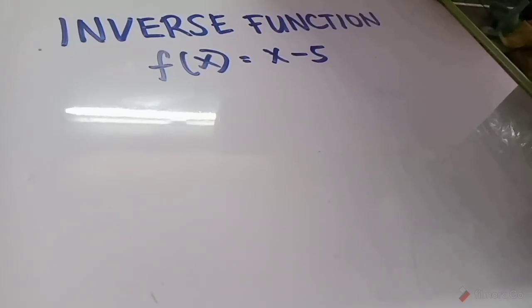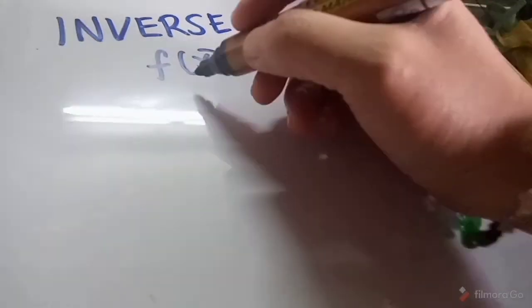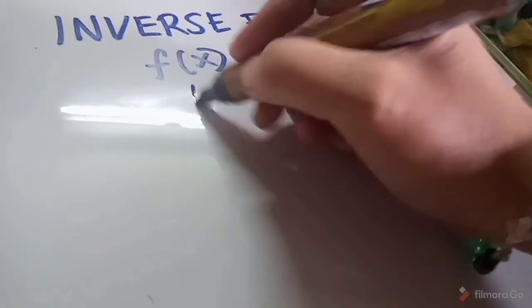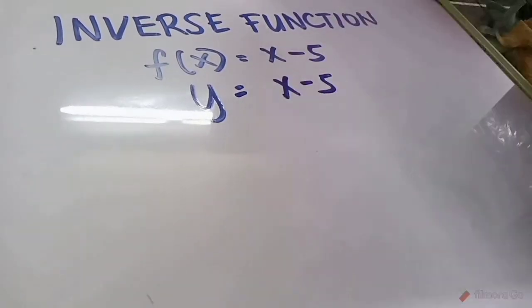Let's solve for the inverse function where f(x) = x − 5. Step 1: Change f(x) in terms of y, so we write y = x − 5.